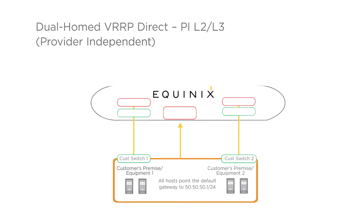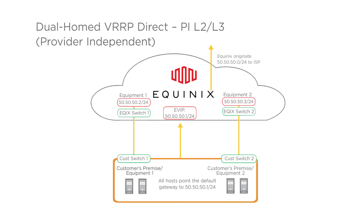This is the same as the previous example, except that the customer wants to use their own subnet and does not want to run BGP. Equinix has to originate the prefix subnet. Note that the customer's own subnet has to be greater than or equal to a /24. Protection switching is based on a layer 3 approach, where the customer's equipment does the switching based on monitoring the hellos, and the customer must provide the multi-access network layer 2 switching required for VRP advertisements between the master and slave.